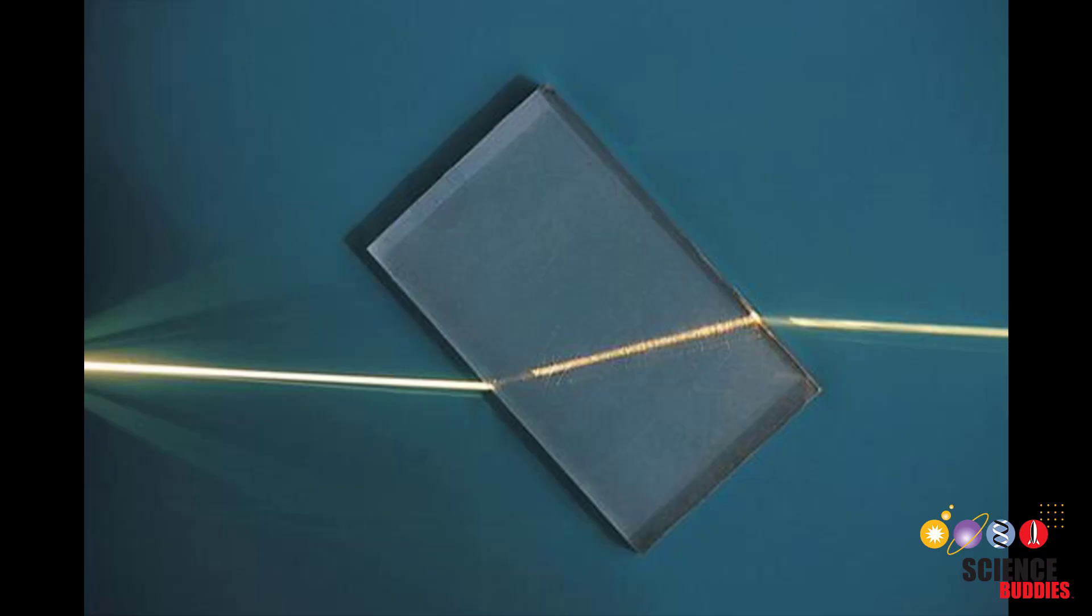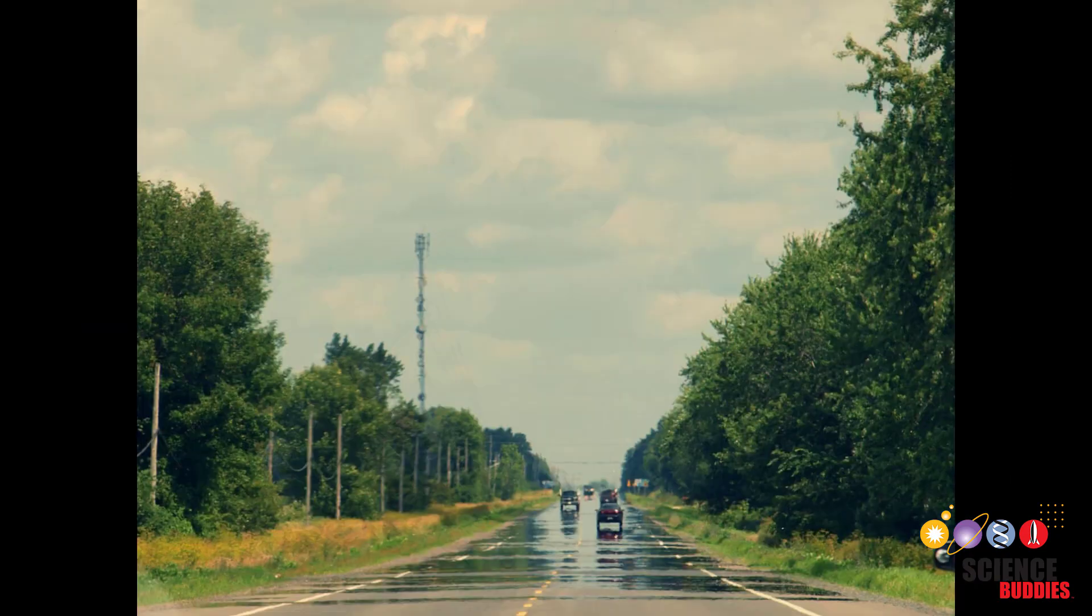Light refracts or changes direction when it passes through different materials like glass or water, but this also happens when it passes through regions of air with different density.